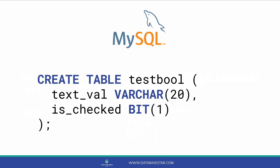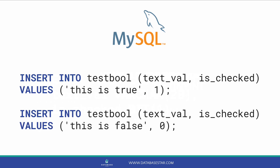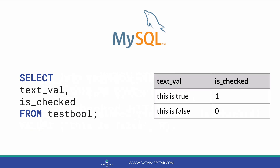Here is the SQL to create the table. Once again, we have the isChecked column and it has a data type of bit with one digit. This will store either 1 for true or 0 for false. Here are the insert statements to add data to that table. We can see that 1 and 0 are inserted. When we select from the table, there is a 1 and a 0 value, just like we inserted.